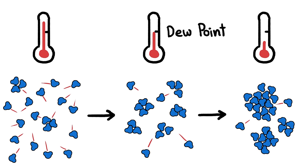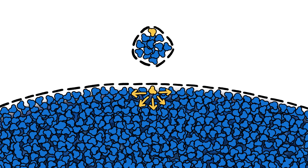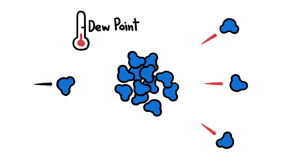But actually, that's only true if the cluster is big to start with. If it's too small, its surface is so curved that the molecules on the outside have few neighbors to bond to, which makes them easy to break off. So the cluster as a whole has higher chances of losing molecules than gaining them, even below dew point.